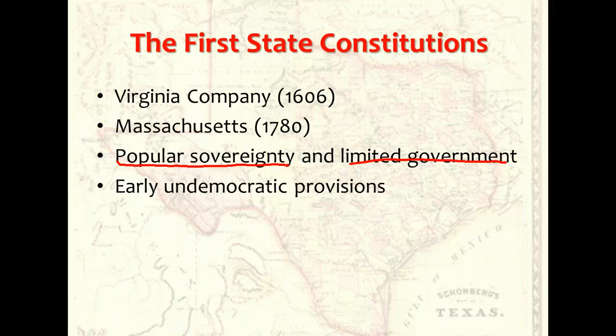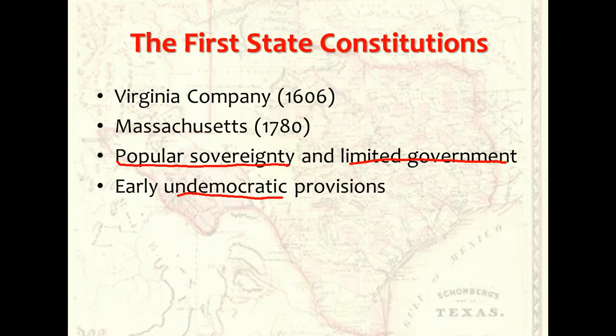The early state constitutions also contained provisions, and had some important omissions, that by today's standards would seem quite undemocratic. No constitution provided for full religious freedom. Each constitution also set rigid qualifications for voting and for office holding, and all gave property owners a highly favored standing.